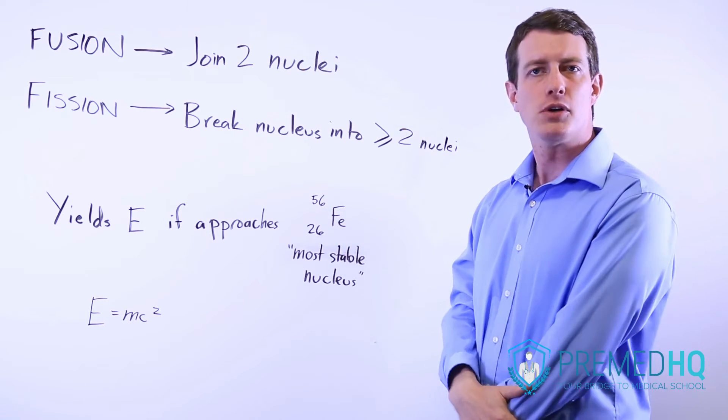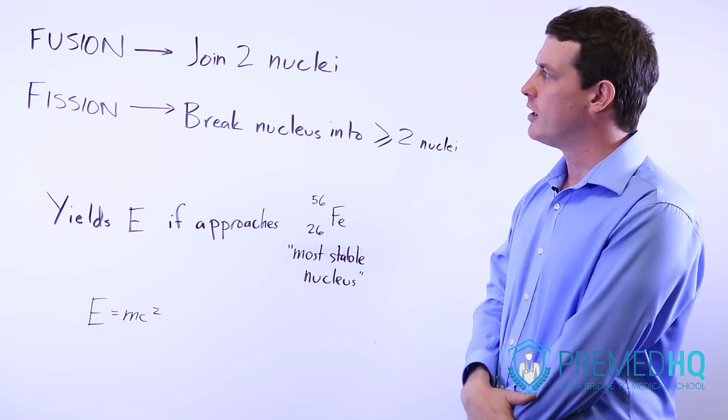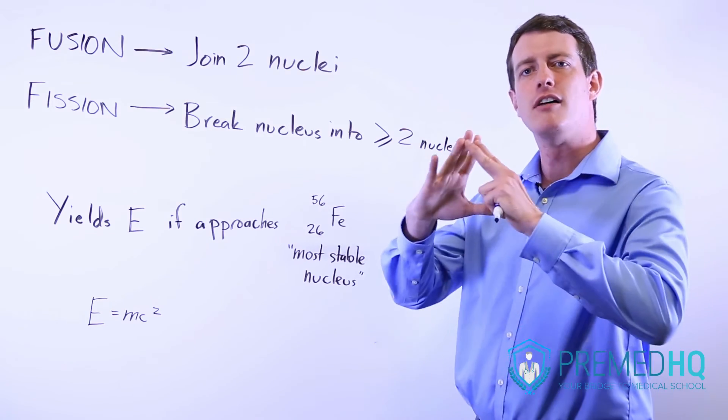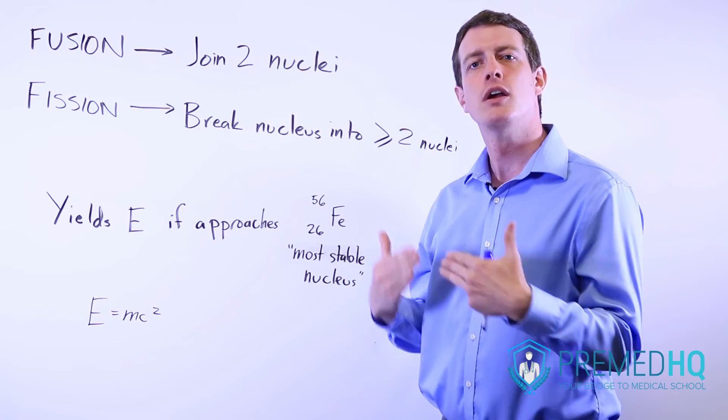So iron with a mass number of 56. So fusion of smaller nuclei and fission of larger nuclei can both produce energy.